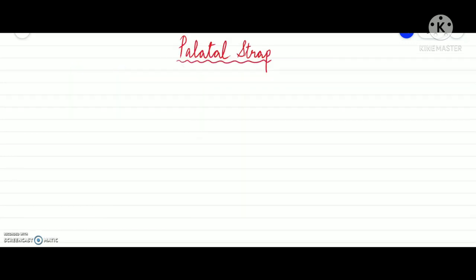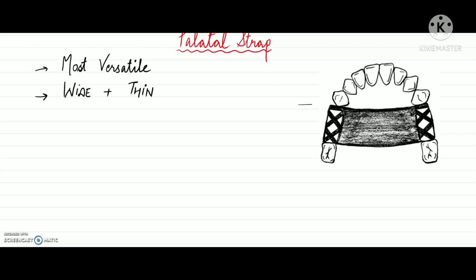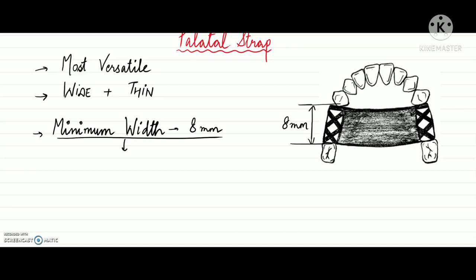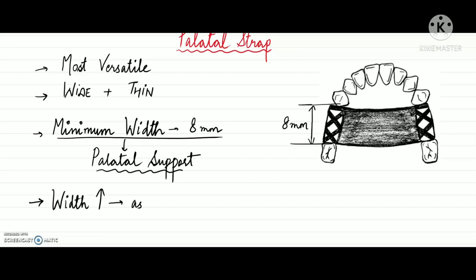The palatal strap is the most versatile maxillary major connector. It consists of a wide band of metal with thin cross-sectional dimensions, which allows it to cross the palate in an unobtrusive manner. A minimum width of 8 mm is essential for the palatal strap to derive support from the palate; otherwise its rigidity will be compromised.